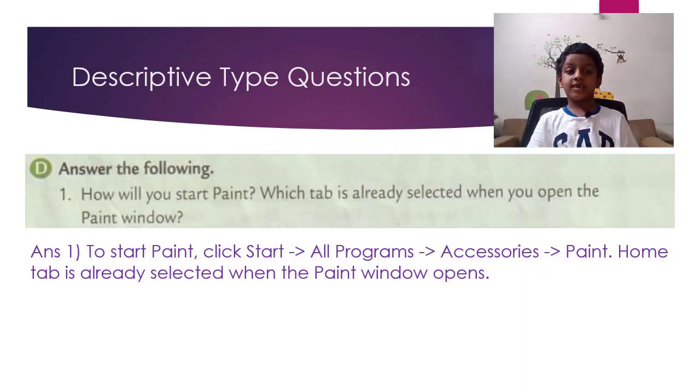Descriptive type questions. D. Answer the following. First question. How will you start Paint? Which tab is already selected when you open the Paint window? So the answer is to start Paint, click Start, All Programs, Accessories, Paint. Home tab is already selected when the Paint window opens.